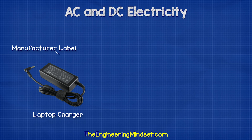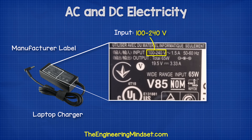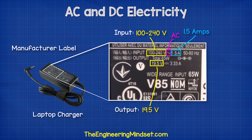If you look on the plugs of your electrical devices you should find labels from the manufacturers which tell you what the product is designed to handle. For example, this laptop charger tells us that for the device to work it needs an input of between 100 and 240 volts and 1.5 amps of AC, or alternating current, which is represented by this symbol here.